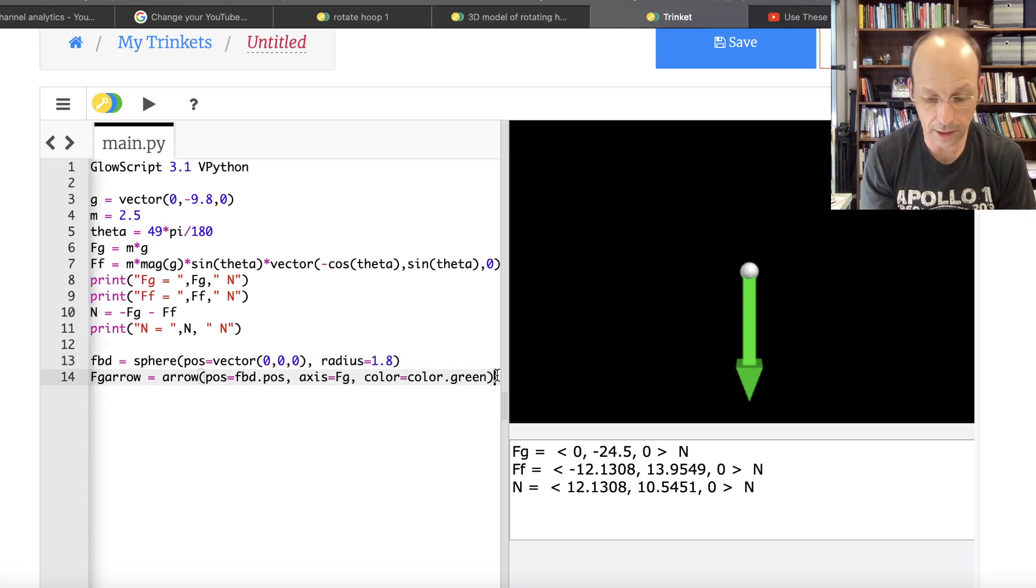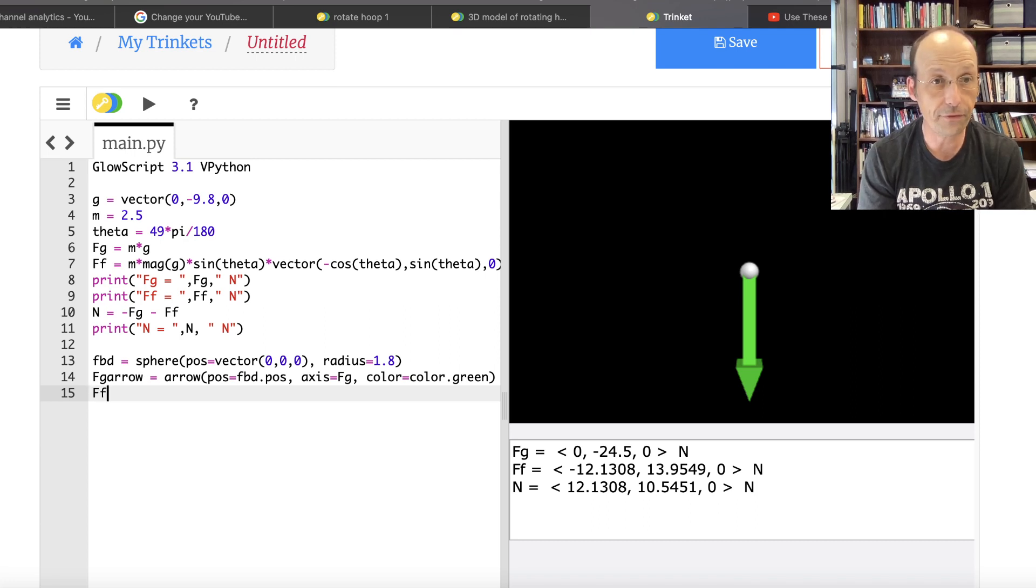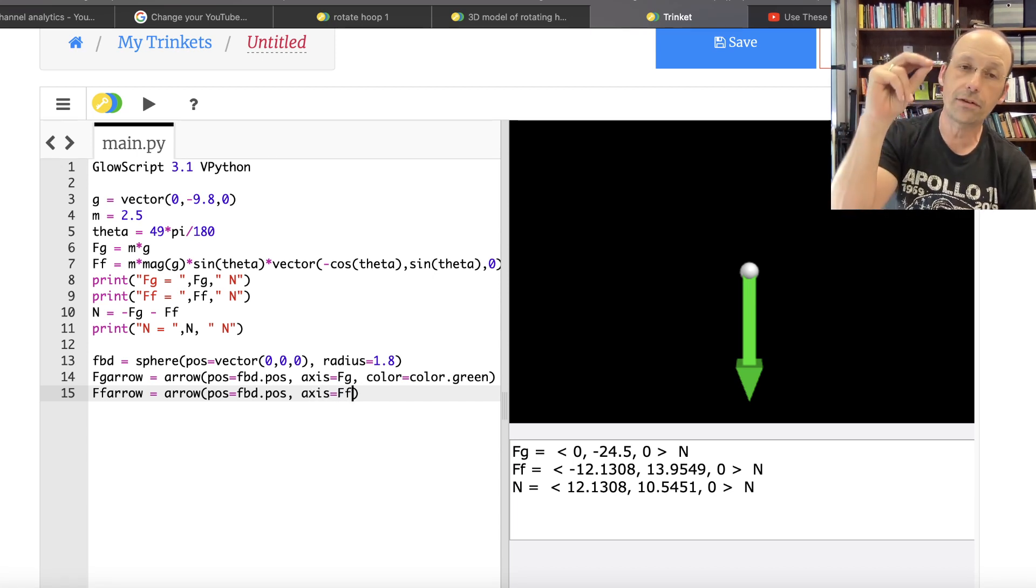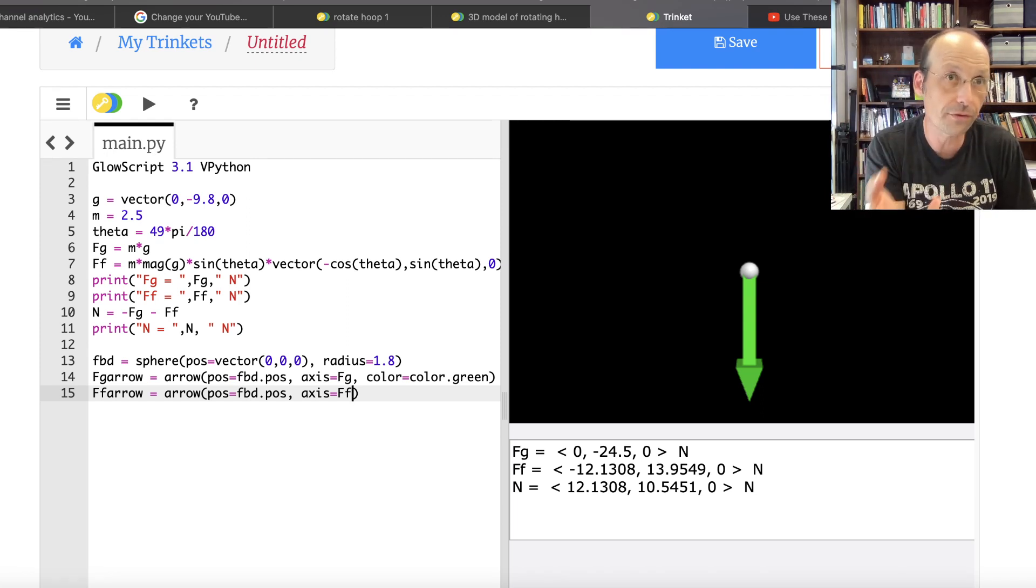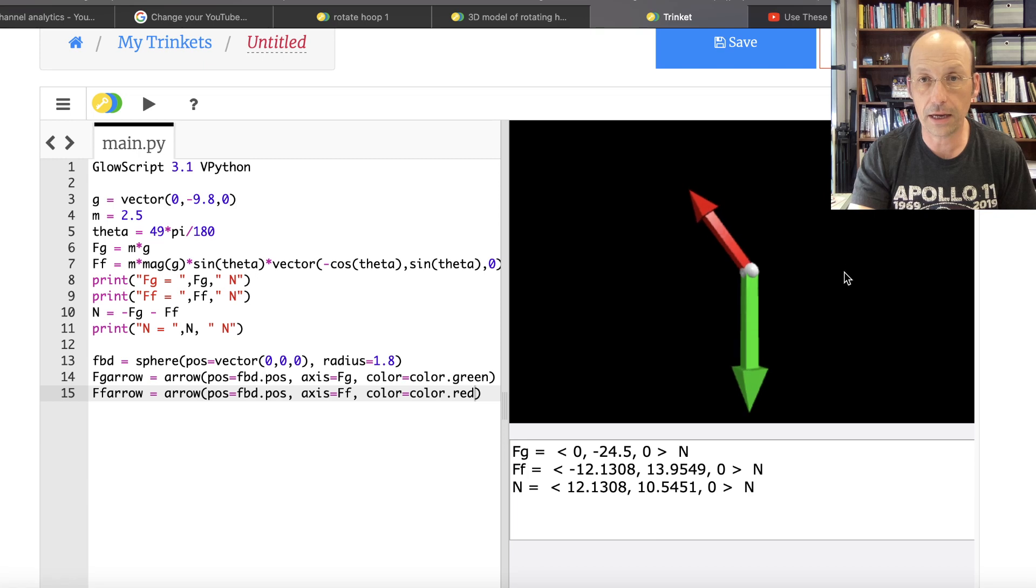Now let's do the same thing for the other two forces. So now I'm going to do FF arrow. The type of object is arrow. The position again is going to be at the free body diagram position. The axis is going to be FF. Now in some cases you may have to scale this down because really we're drawing these in space. These are in meters. And I'm using a Newton force vector. So as long as you're okay with that scale, it's actually drawing it as 12 meters by 13 meters in the x and the y direction. That's the frictional force. And I think friction is red. So let's say color equals color dot red. And then let's run that one. There you go. Now one of the things that may bother you, the width of the arrow depends on the length. I'm okay with that. But let's just leave it.